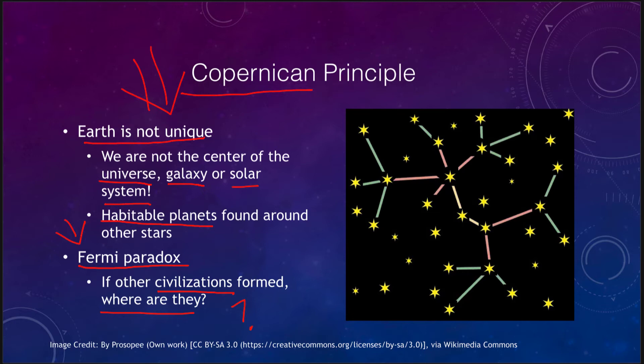What would happen — as shown in the map here — is that when a civilization formed on a star and developed space travel, it should be able to colonize other planets very quickly. And then those would colonize other planets around other stars. Over relatively short times, galactically speaking — meaning many millions or even hundreds of millions of years — that civilization would expand out and cover the galaxy. So there should be civilizations all over the place.